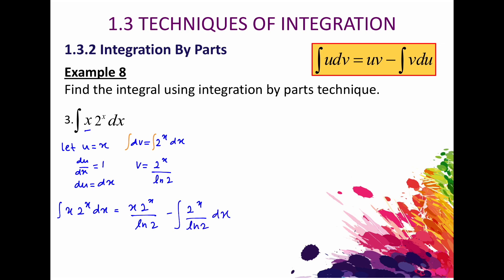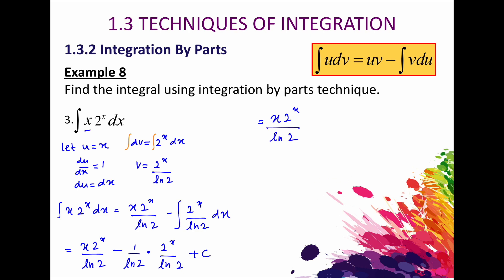We get x times 2^x over ln 2. Putting 1 over ln 2 outside the integral, we just integrate 2^x to get 2^x over ln 2, then plus C. The final answer is x times 2^x over ln 2 minus 2^x over (ln 2)² plus C.